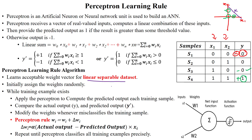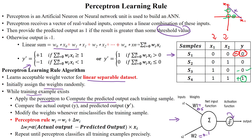Whenever the dataset is linearly separable, we can use the perceptron learning rule with a linear sum activation function and a threshold value to classify examples. Initially, in the perceptron network, we assign random weights — for example, w1 = 0.5 and w2 = 0.1. We then check each training example, applying the perceptron rule to compute the predicted output by calculating the linear sum and comparing it to the threshold.